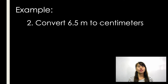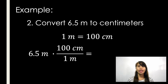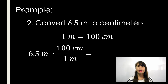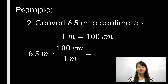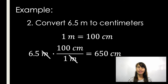Next example: convert 6.5 meters to centimeters. First identify what unit is smaller. Since centimeter is smaller than meter, it is bigger to smaller, so we multiply. 1 meter equals 100 centimeters. Copy the given: 6.5 meters times 100 centimeters over 1 meter — cancel meters — then multiply and divide. 6.5 times 100 divided by 1 is equal to 650 centimeters.